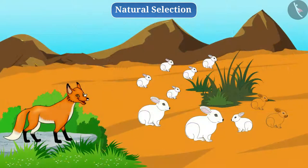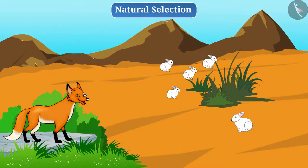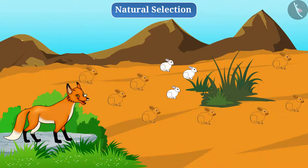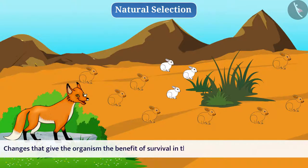While brown color that was a rare characteristic in the beginning now became the most common characteristic. If the brown variation had not emerged, the rabbit population would have reached the verge of destruction. But due to the variation of brown color, the rabbit population is now getting the survival advantage. Changes that give the organism the benefit of survival in the environment are called adaptation.